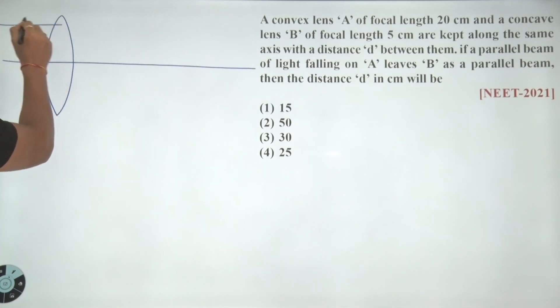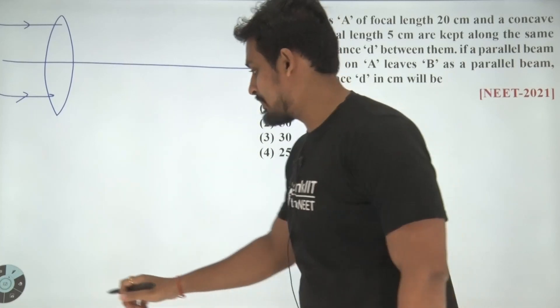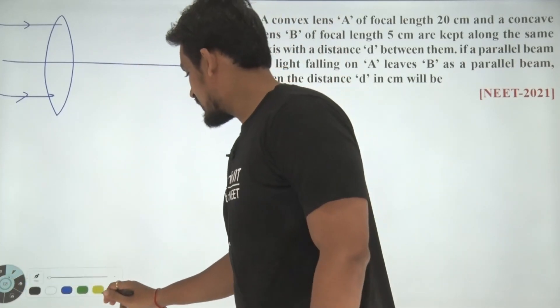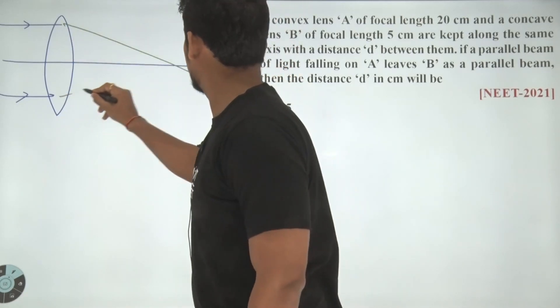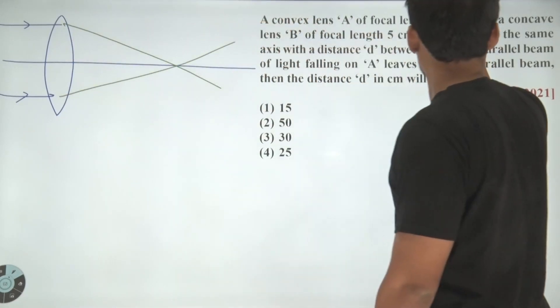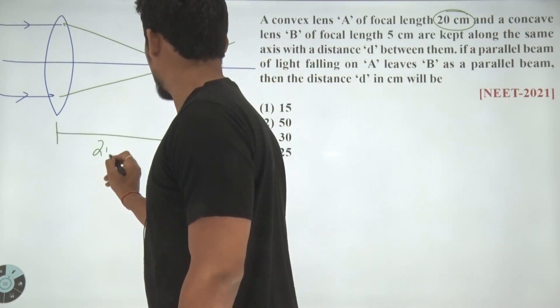As we know, when parallel rays are incident on a convex lens, these will get converged to its focus. What is the focus given in the question? It is 20 centimeter. So this length has to be 20 centimeter.